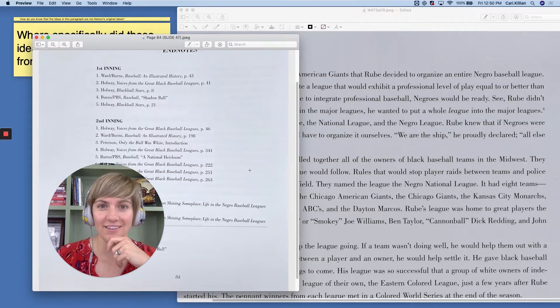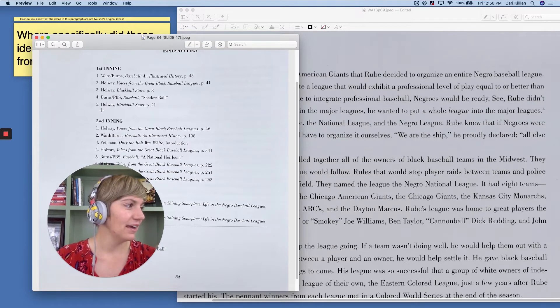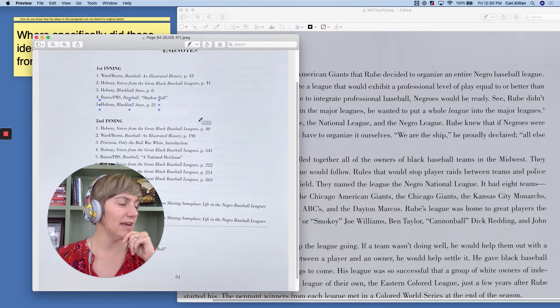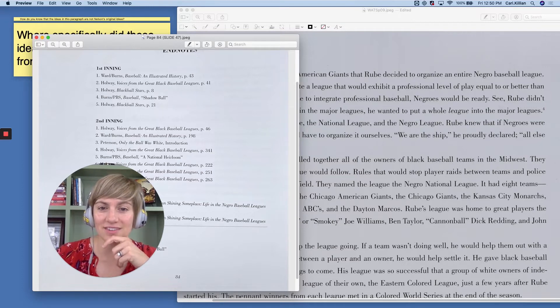So right here, we saw the little four. If I go over to the endnote section and we are still in first inning, I can see that this source is Burns Baseball Shadow Ball. Does everyone see that? And then for endnote number five, right over here, do the same. See if you can figure out from first inning who the source is.